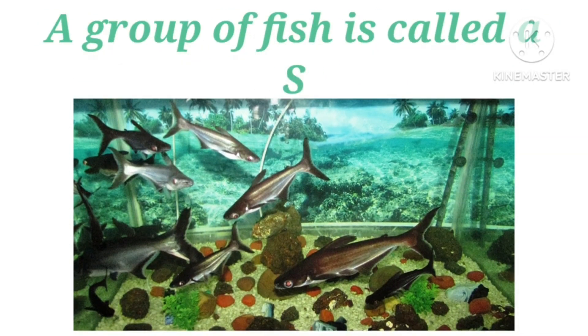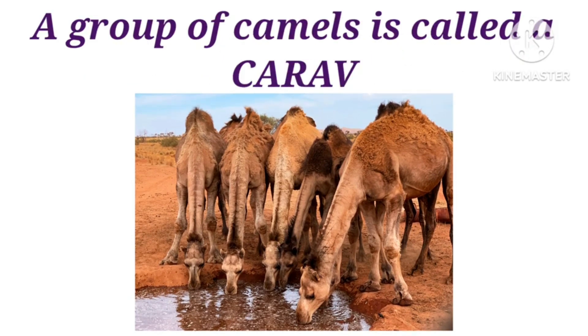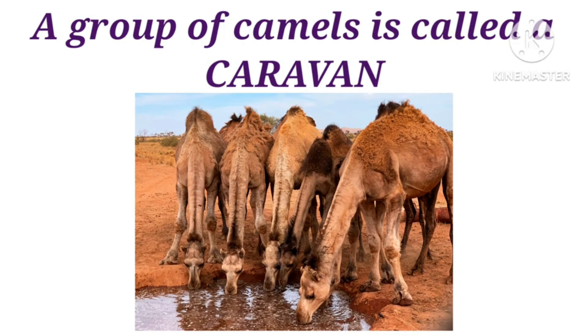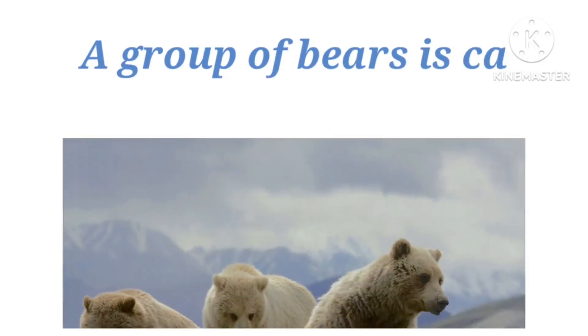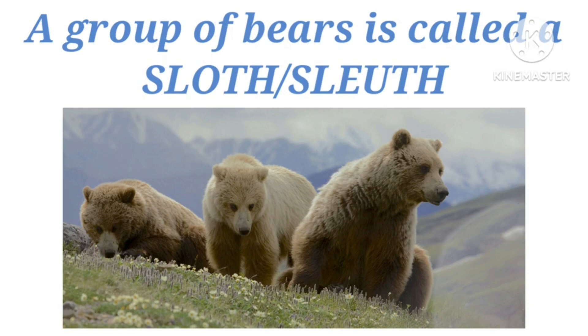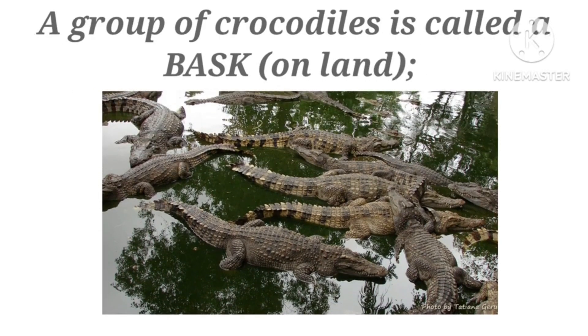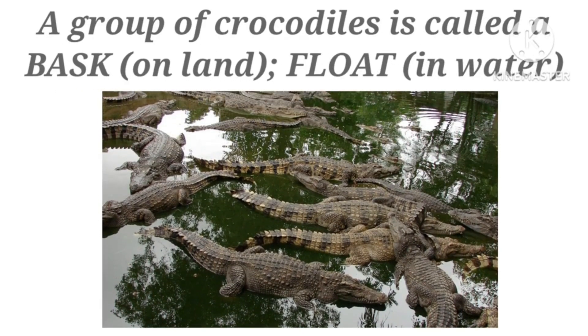A group of fish is called a school. A group of camels is called a caravan. A group of bears is called a sloth or sleuth. A group of crocodiles is called a bask on land and a float in water.